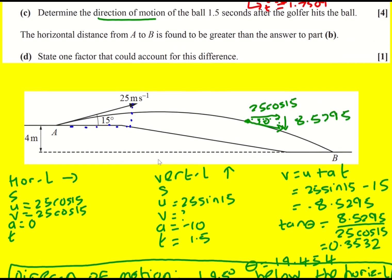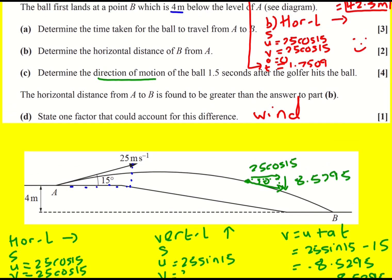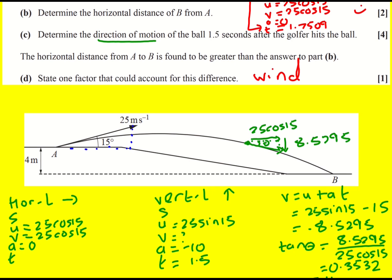Finally, state one factor that could, oh sorry, I've missed a bit here. The horizontal distance from A to B is found to be greater than the answer to part B. State one factor that could account for this difference. So I put wind, like it could be a windy day. So wind, I think that's what we actually need to write. And if it was a windy day, it's going to obviously go further than otherwise would. The answers mention also using a more exact value for gravity, because actually gravity is a bit less, 9.8, so that could also do it. And they also talk about topspin and backspin. In fact, the answers say no consideration of spin on the ball. All right, well done on this question.